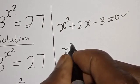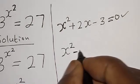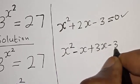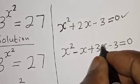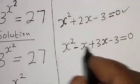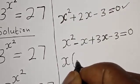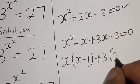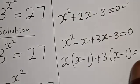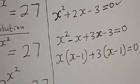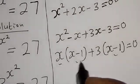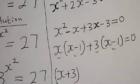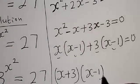So our equation becomes s squared minus s plus 3s minus 3 equals 0. Factoring: s times (s minus 1) plus 3 times (s minus 1) equals 0. Since (s minus 1) is common, we get (s plus 3) multiplied by (s minus 1) equals 0.